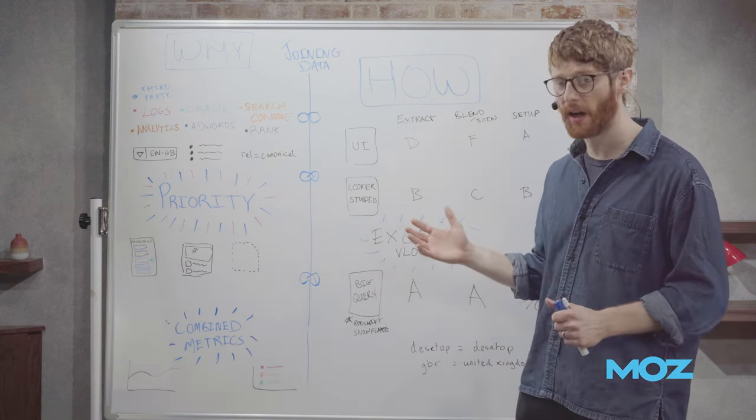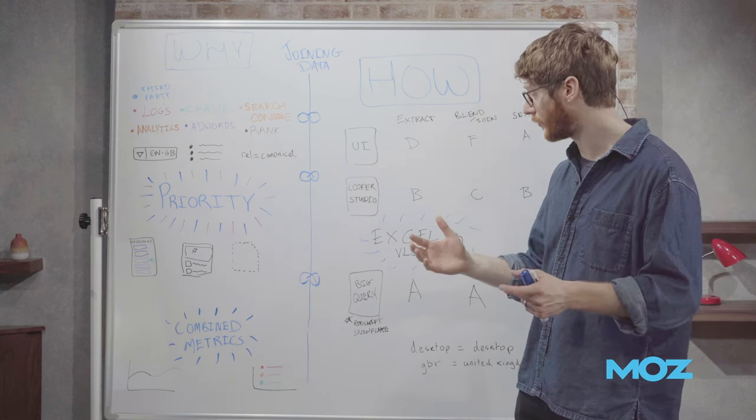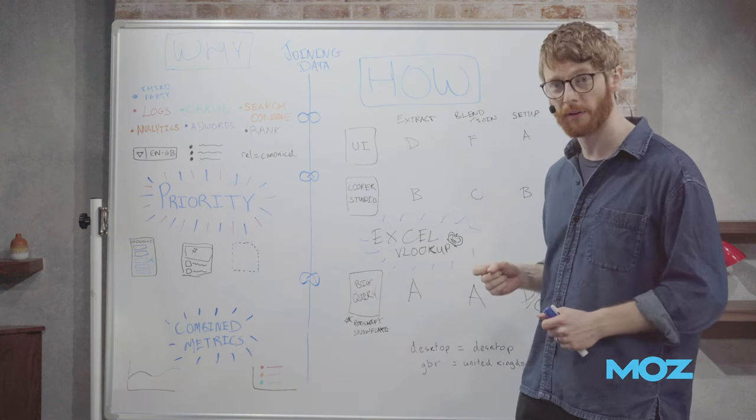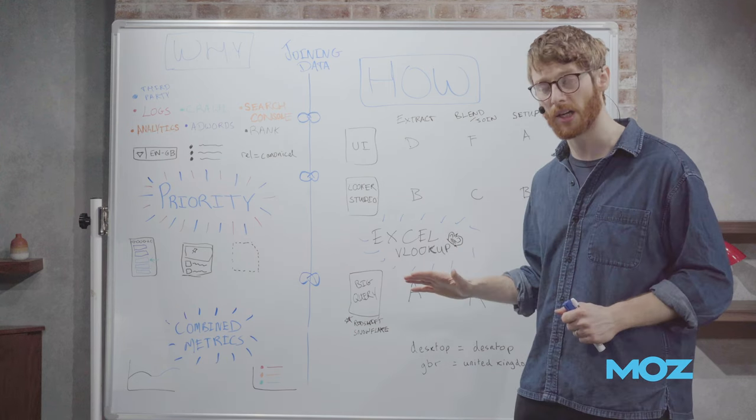When it comes to the how, I said generically, extract your data. Looker Studio is often a good place to go and get that raw extract from. You're blending, you're never going to go wrong with Excel and your VLOOKUPs but you can do something in Looker Studio and when you get really serious about this, you want to run down towards a data warehouse.